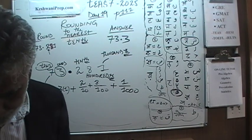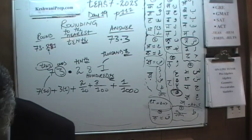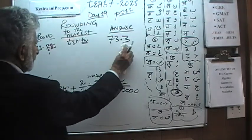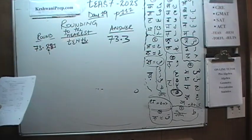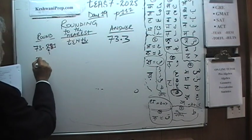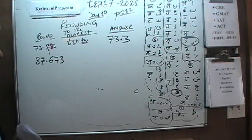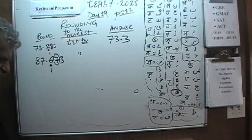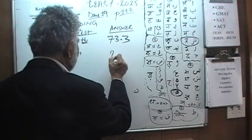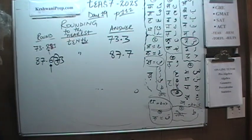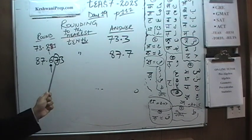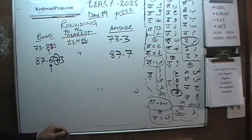87.673 — again the same thing. We are being asked to round it to the nearest tenth. The tenths digit is 6, and what comes after it is 7. Since 7 is more than 5, it is going to become 87.7. So 87.673 rounds to 87.7 because the digit after the tenths place is 5 or more.